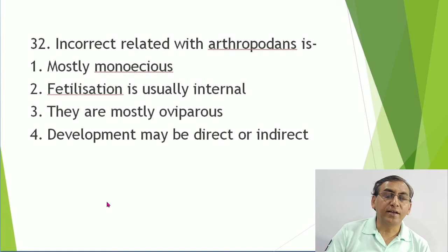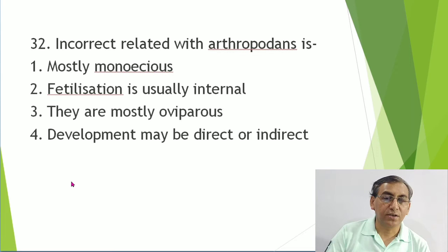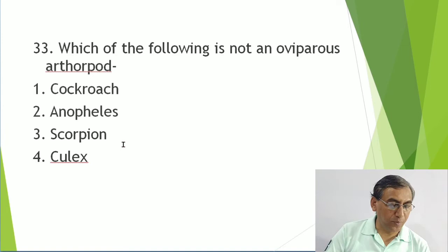Arthropods are mostly dioecious - they are not mostly monoecious. Fertilization is usually internal, mostly oviparous, and development may be direct or indirect. The exception to oviparous is scorpion, which is viviparous.